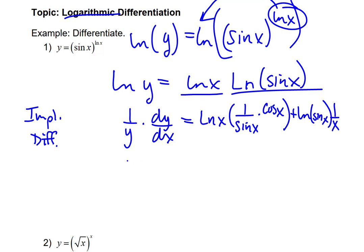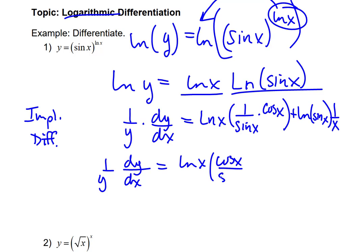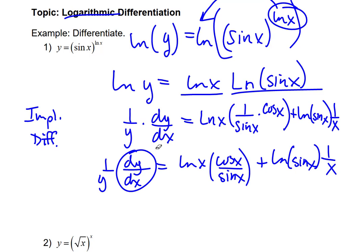The whole point is to get dy/dx alone. On the left we have 1 over y times dy/dx. On the right, simplifying: natural log of x times cosine of x over sine of x — which is cotangent — plus natural log of sine of x times 1 over x. Since there's only one dy/dx, we can isolate it by multiplying both sides by y.